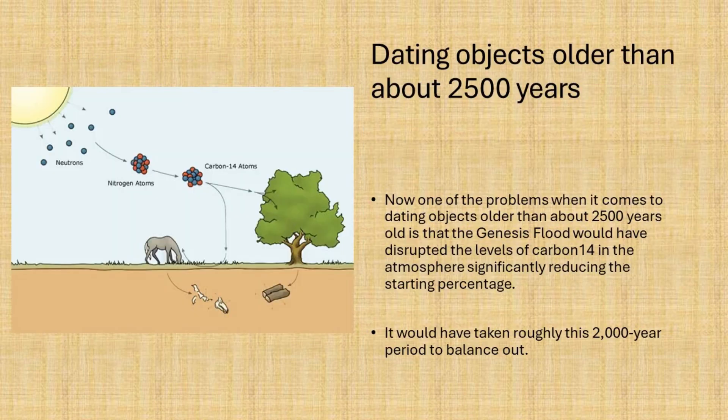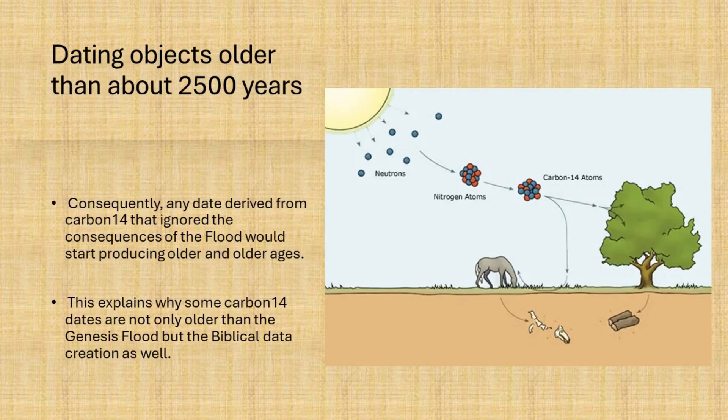Now, one of the problems when it comes to dating objects older than about 2,500 years is that the Genesis Flood would have disrupted the levels of carbon-14 in the atmosphere significantly, reducing the starting percentage. It would have taken roughly 2,000 years to balance it out. Consequently, any date derived from carbon-14 that ignored the consequences of the Flood would start returning older and older ages. This explains why some carbon-14 dates are not only older than the Genesis Flood, but the biblical date for creation as well.